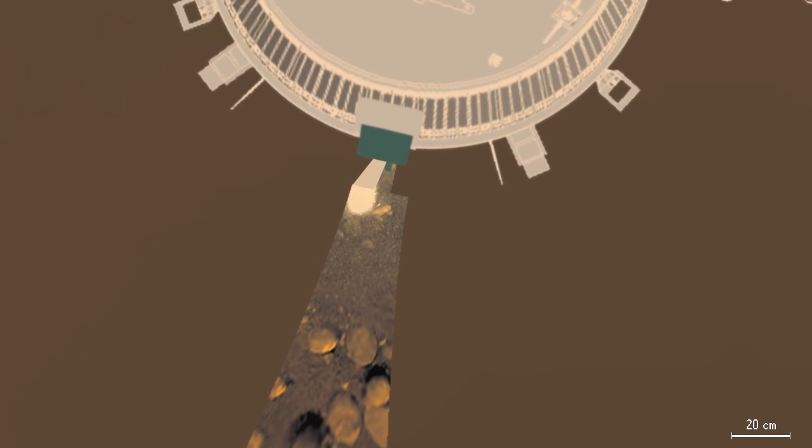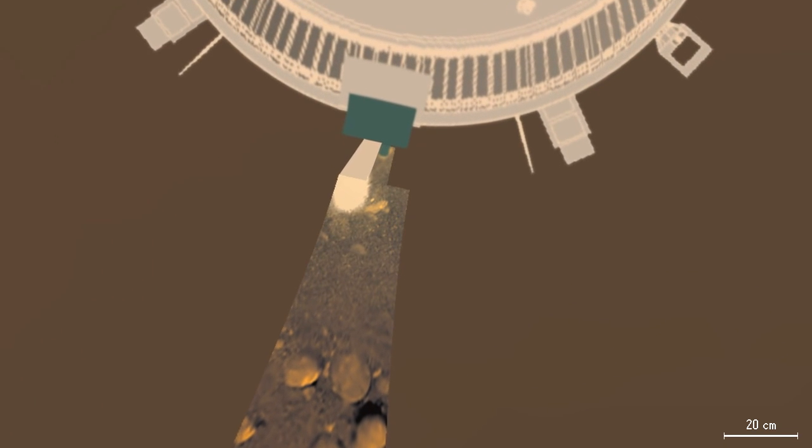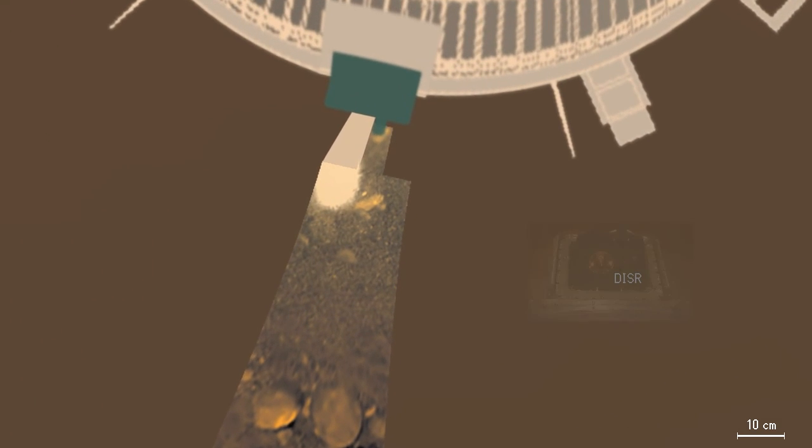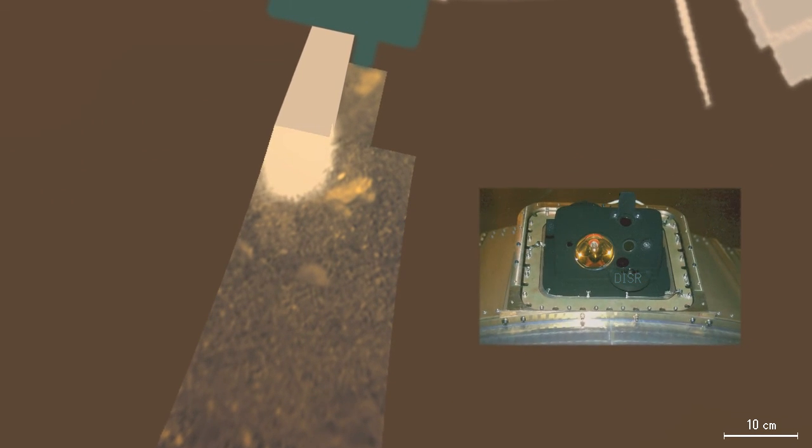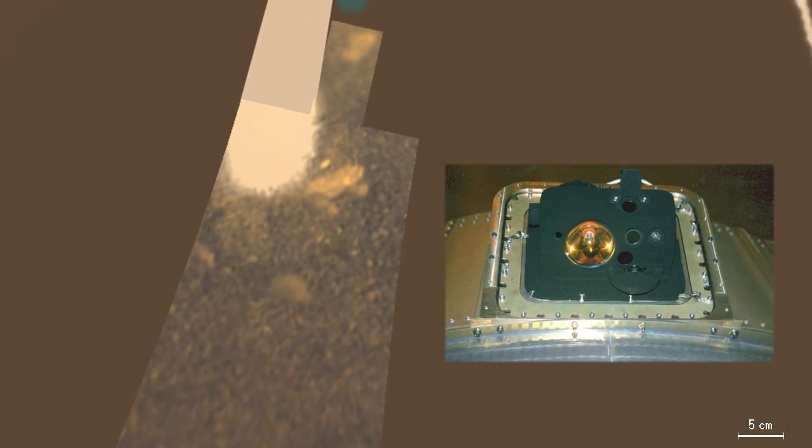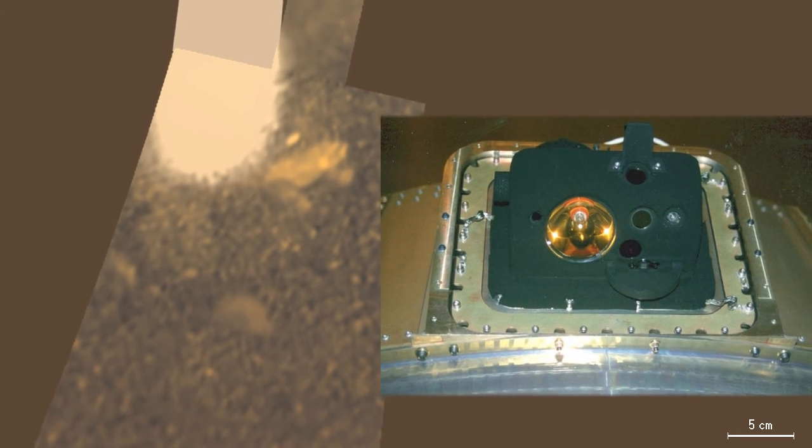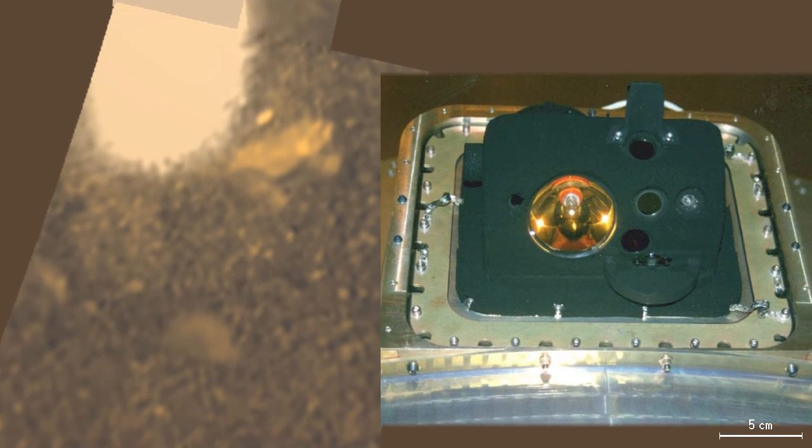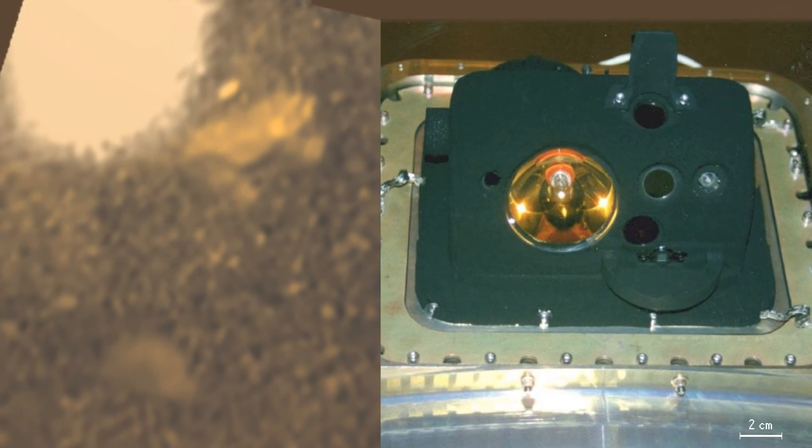Little sunlight reaches Titan's surface due to its thick haze and large distance from the sun. The right side shows the green DISR instrument with the gold-colored lamp and the three camera windows to its right, the cameras that provided the first close-up view of Titan's shrouded surface.